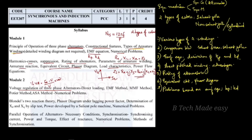Now we will learn how to determine voltage regulation. The first method is the direct loading method. The direct loading method can be used with salient pole or non-salient pole, or cylindrical rotor type machines. However, since it has disadvantages, we may use other methods.